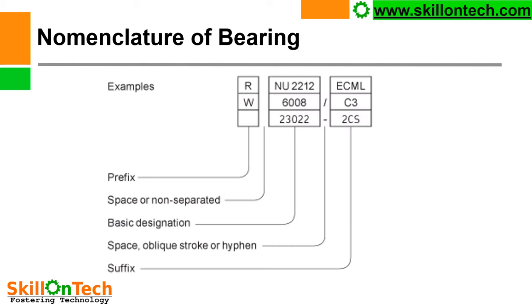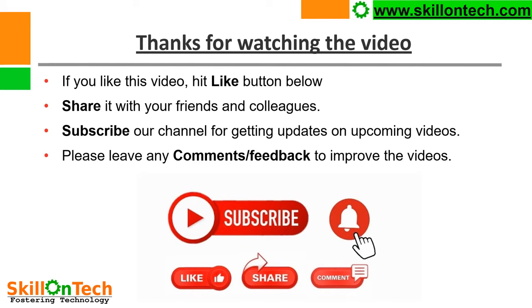The final bearing nomenclature structure is: prefix, then space or non-separated basic designation, then space, oblique stroke, or hyphen, followed by suffixes such as C3, 2CS, ECML. By understanding this complete nomenclature, we can fully identify any bearing. Thank you for watching — please provide feedback to improve the videos.